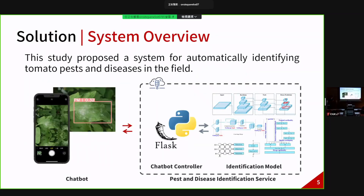This study proposes a system for identifying tomato pathogen disease in the field through light and deep learning. The system consists of a chatbot, which is an instant messenger application, a chatbot controller, and an identification model.